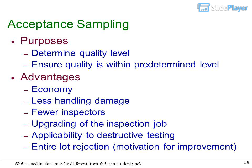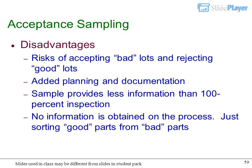Acceptance sampling purposes and advantages: Determine quality level, ensure quality is within predetermined level. Advantages include economy, less handling damage, fewer inspectors, upgrading of the inspection job, applicability to destructive testing, entire lot rejection, and motivation for improvement.